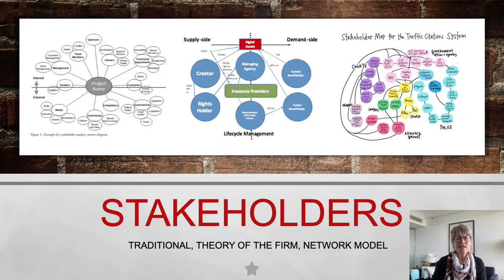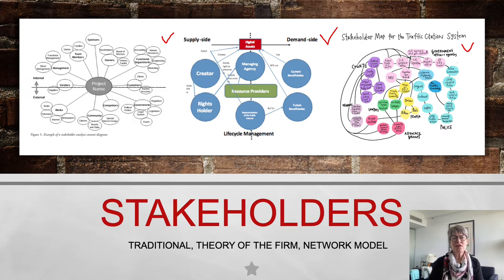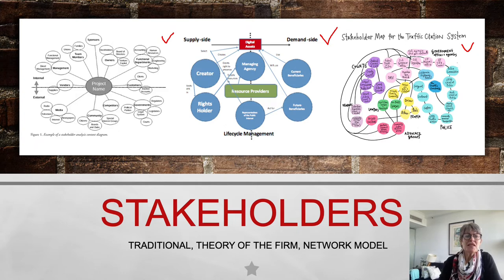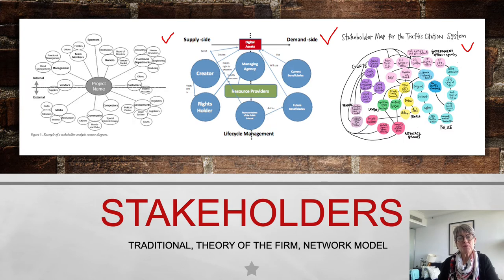These three maps give you an idea of what a stakeholder map might look like - sometimes they're quite complex. We have the traditional stakeholder theory view, the theory of the firm, and the network model. The one on the left is a traditional view with a key aspect at the center and spokes out to the people, things, entities, or industries that impact or influence that key item. The other maps show there's no one true way and it can be applied to different aspects.